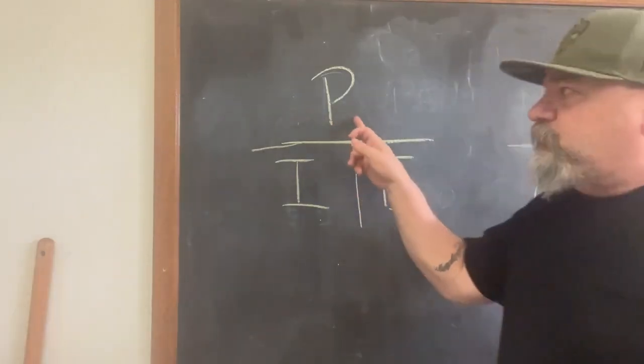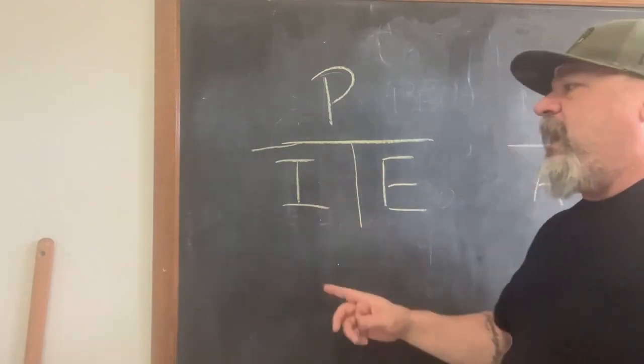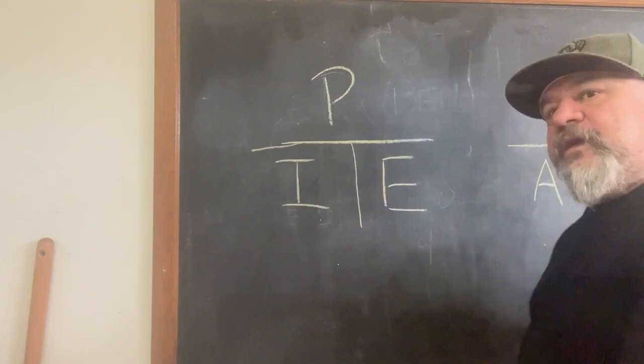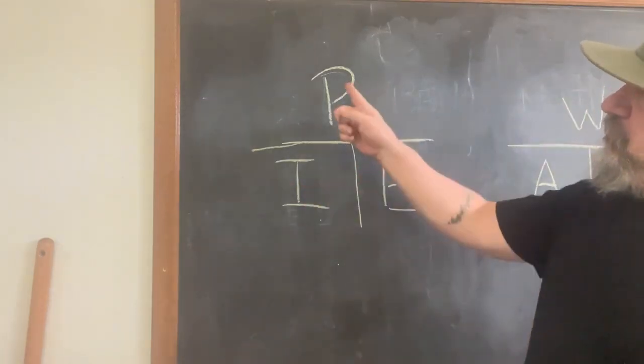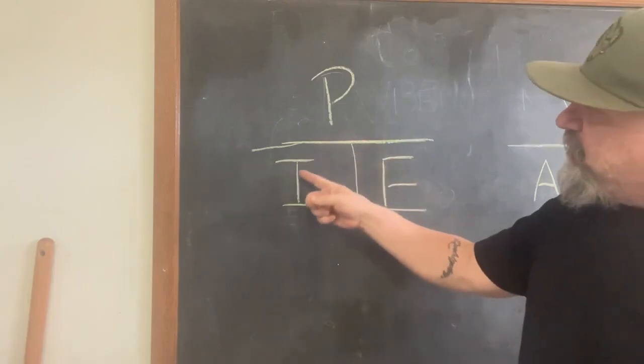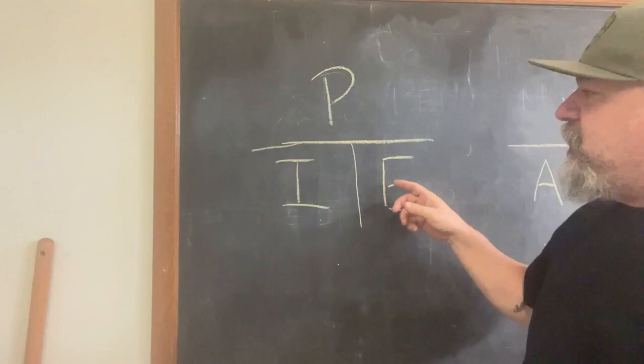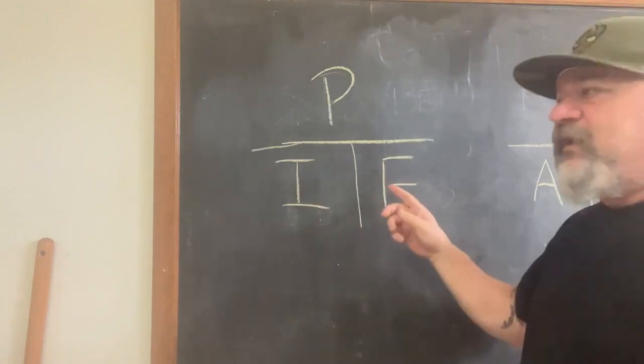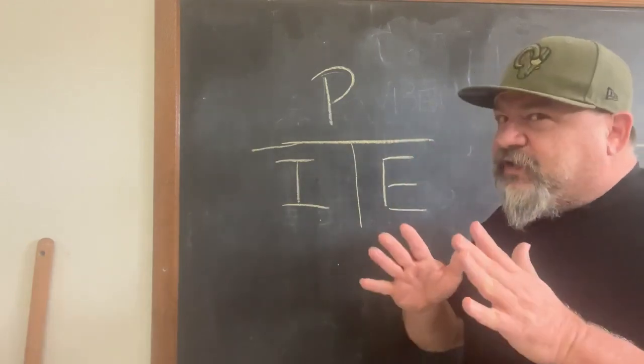P is power. I is current. That is amperage, like your breaker size. E is voltage. PIE. So P divided by I equals E. P divided by E equals I. I times E equals P. You're like, what does that mean? Well, let me explain it to you a little easier.